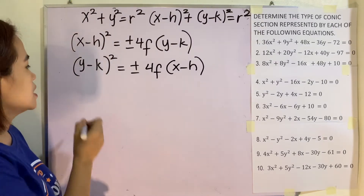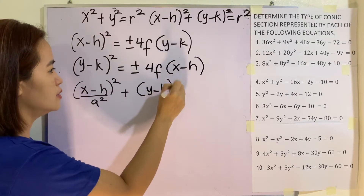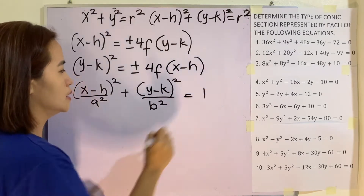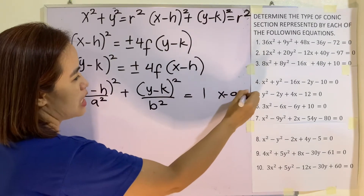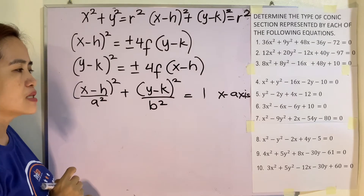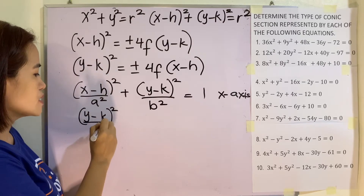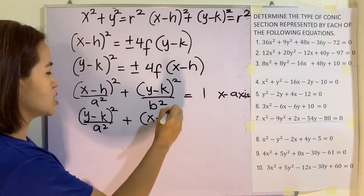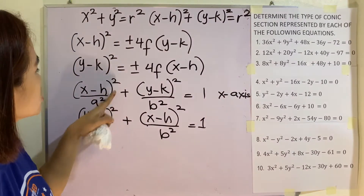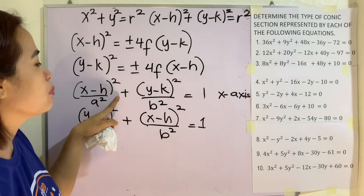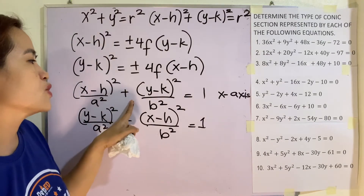Next, what about the ellipse? We have the formula: quantity x minus h squared over a squared, plus quantity y minus k squared over b squared, is equal to 1. Here, the major axis is the x-axis. If our major axis is the y-axis, we use: quantity y minus k squared over a squared, plus quantity x minus h squared over b squared, is equal to 1. Take note that these equations have the same sign — they are both plus. Meaning, x squared is positive and y squared is also positive.